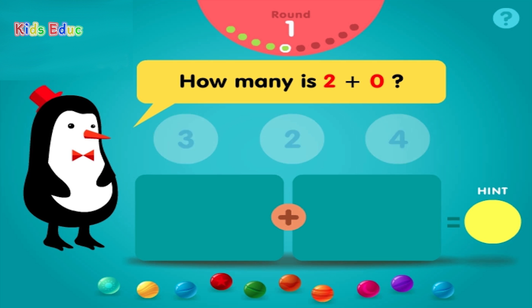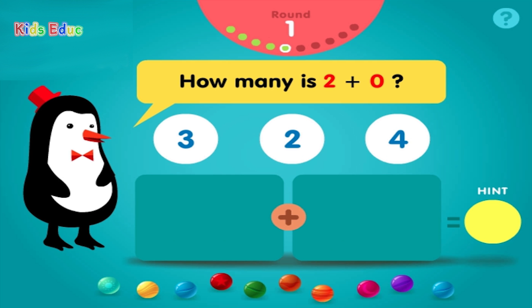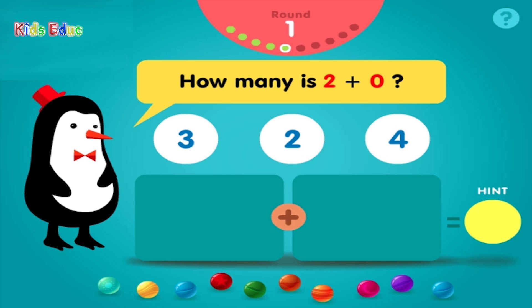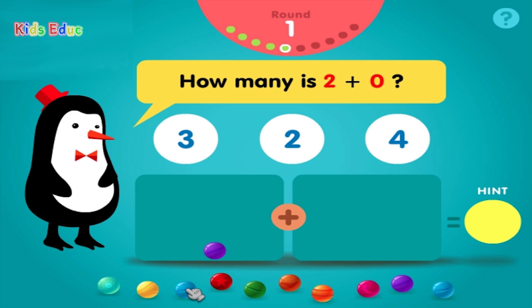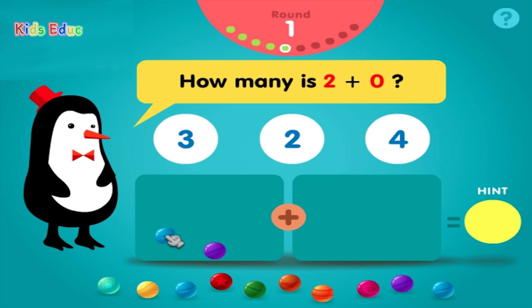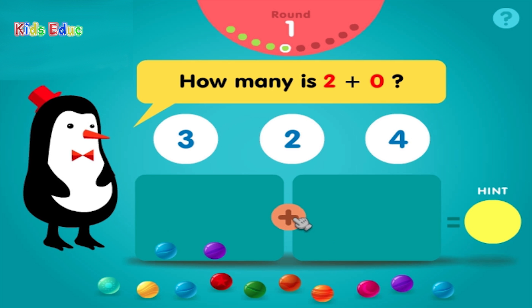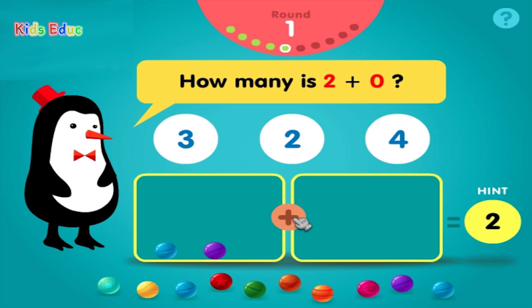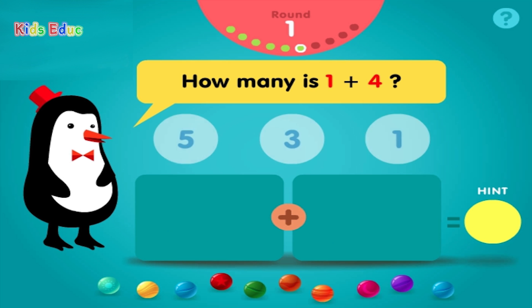How many is 2 plus 2? 1, 2, plus 0, 1, equals 2. Radical!